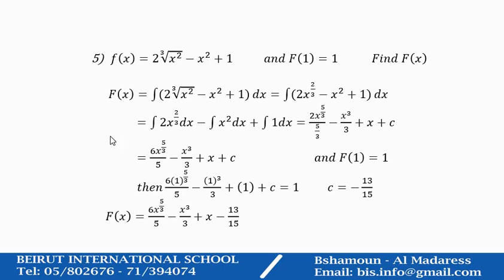The fifth example is similar to the fourth one. We know small f(x), and we know that big F(1) equals 1 — find the original function. The integration of small f(x) gives big F(x); you find the integration as usual, then substitute x equals 1 and y equals 1. You end up with c equal to minus 13 over 15, and the original function will be this function.